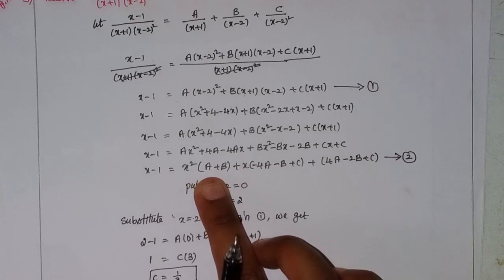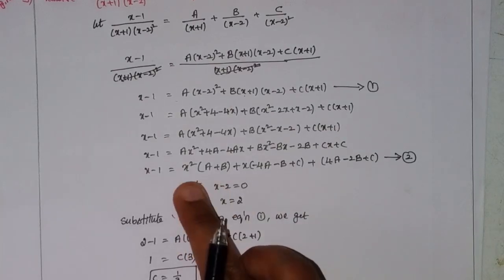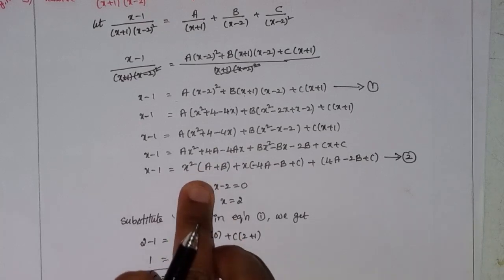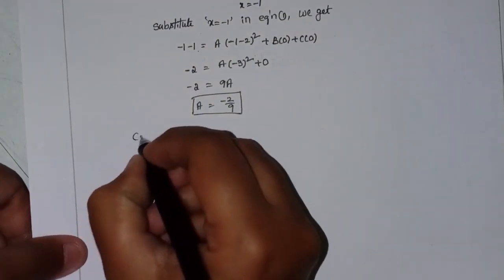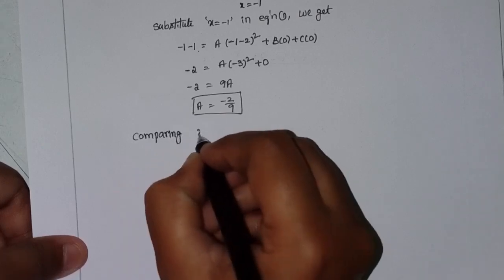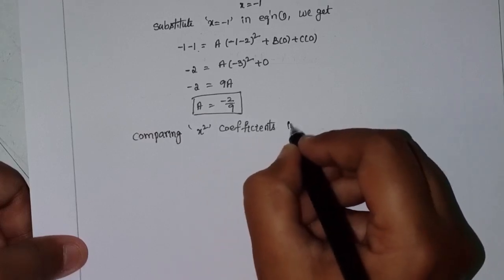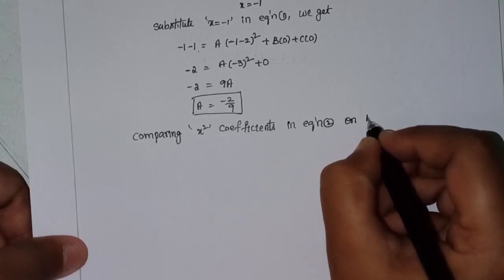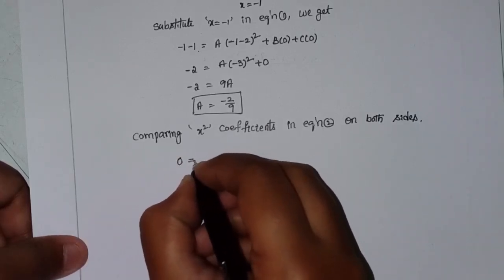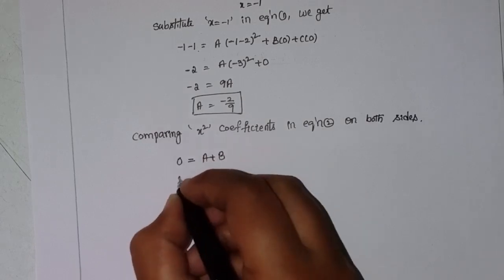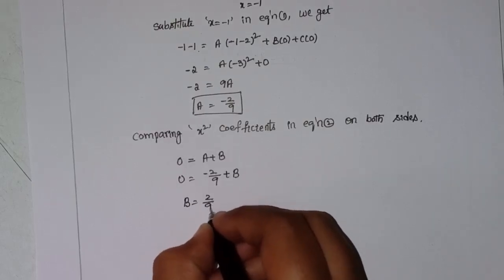Now comparing x² coefficients in Equation 2 on both sides, we get 0 equals A plus B. Substituting A equals minus 2 by 9: 0 equals minus 2 by 9 plus B. Therefore B equals 2 by 9.